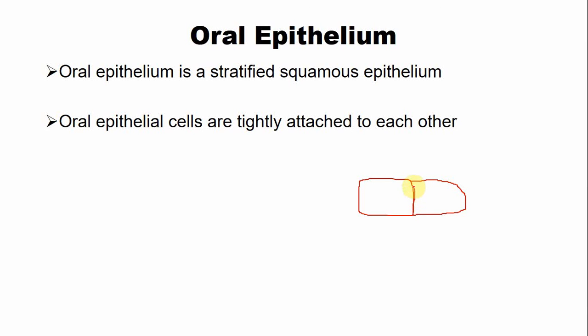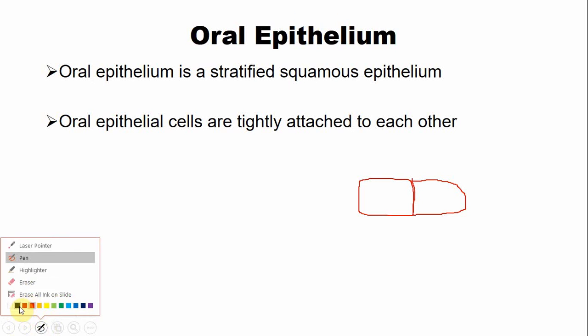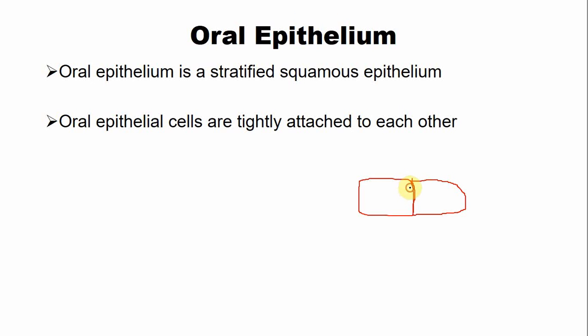The cells are attached with each other with specialized junctions known as desmosomes, so they are tightly attached. These cells contain all the organelles that are present in a normal cell, like mitochondria, endoplasmic reticulum, and Golgi apparatus.